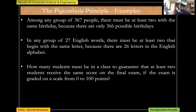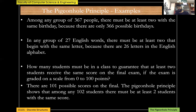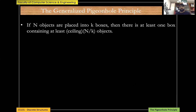To guarantee that at least two students share the same score, we add one to the 101 possible scores, giving 102. So 102 students are required to guarantee that at least two students will receive the same score on the final exam.